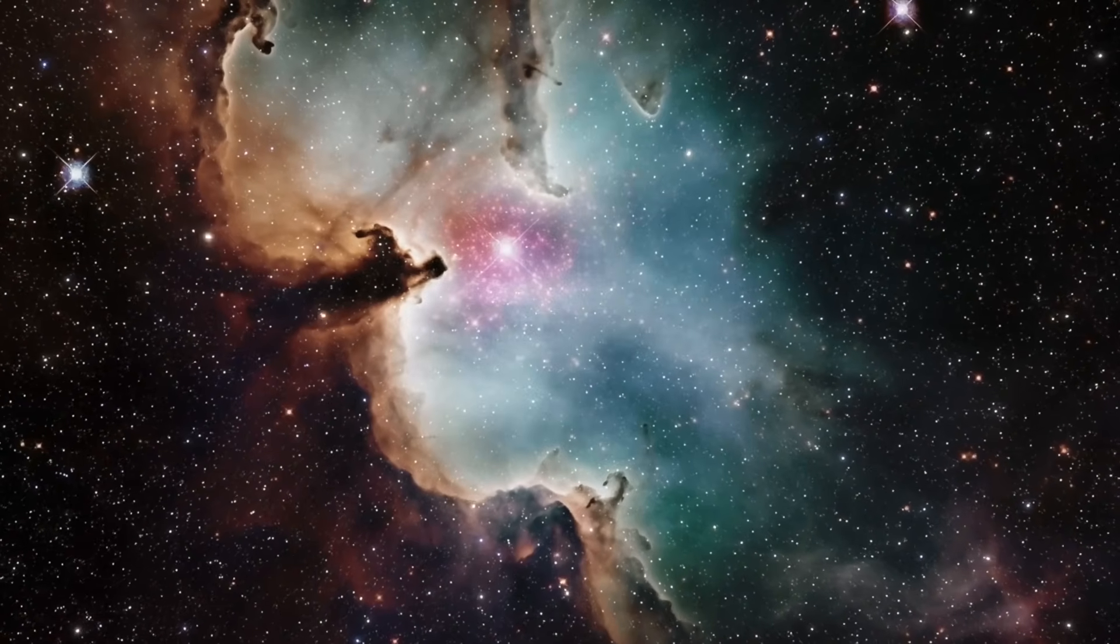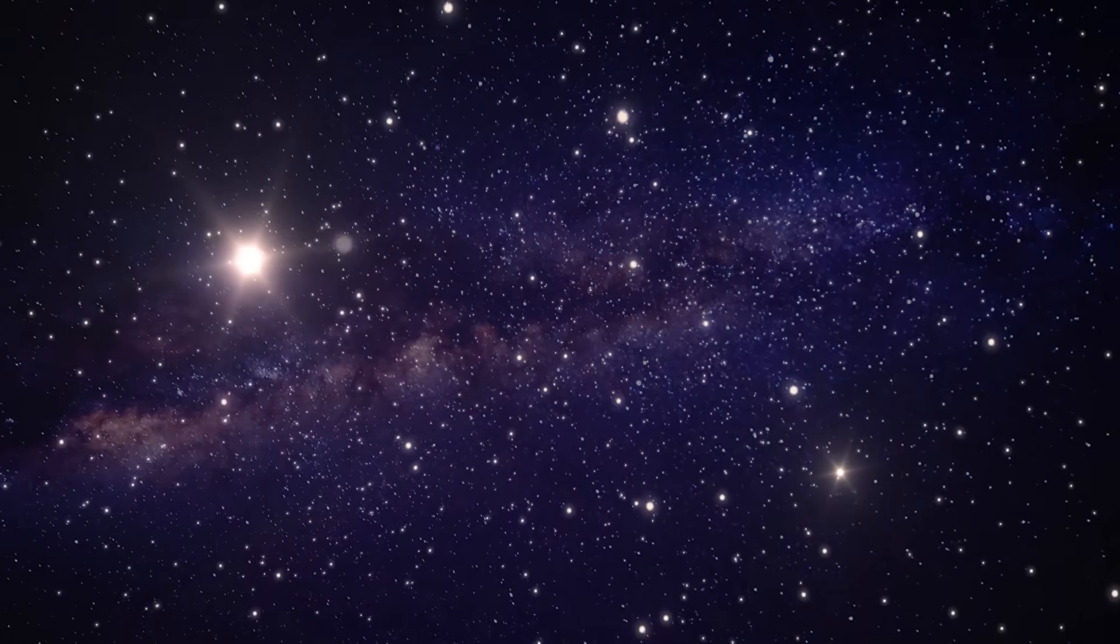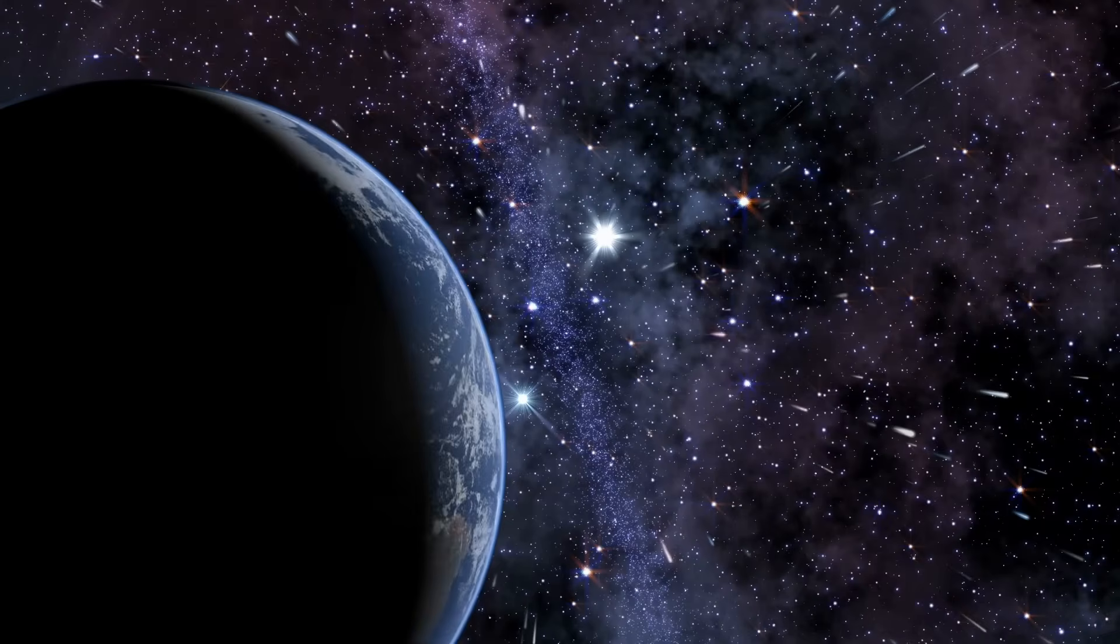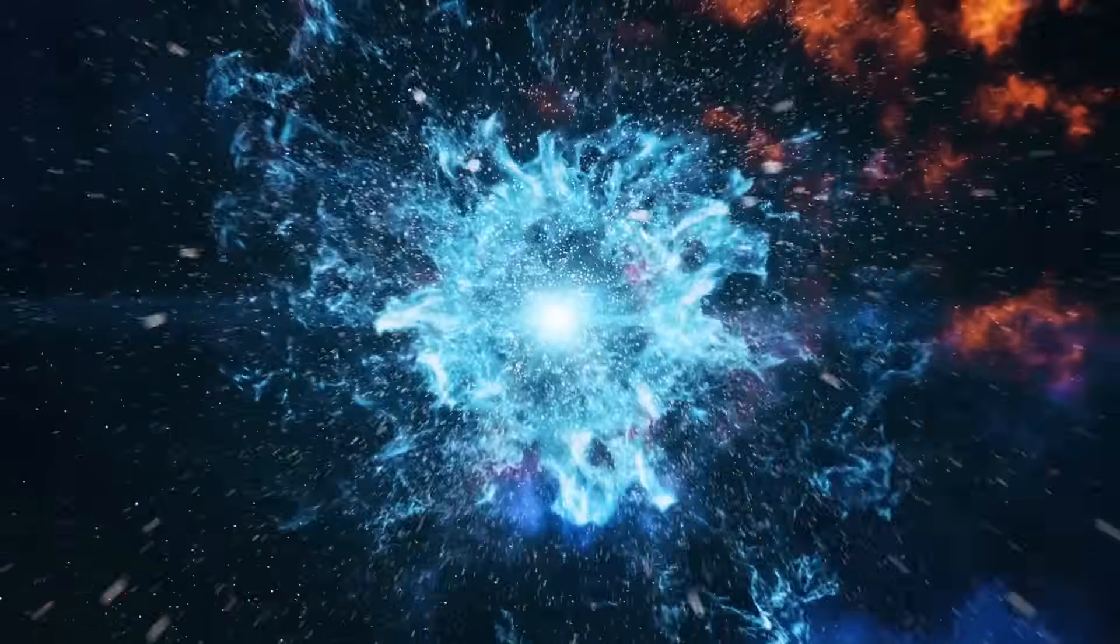The edge of the observable universe is not a wall or a physical boundary, but rather a limit set by the speed of light and the age of the universe. Since the universe is about 13.8 billion years old, we can only see objects whose light has had time to reach us since the Big Bang.